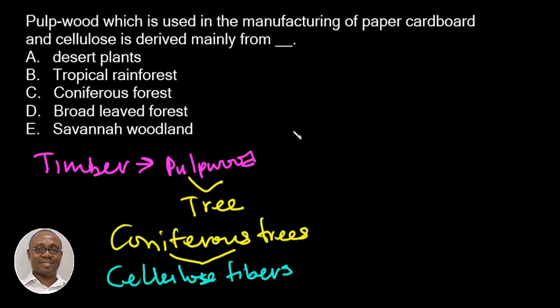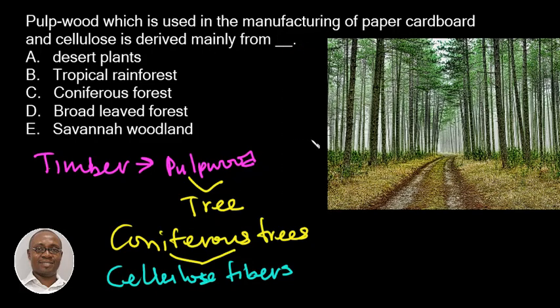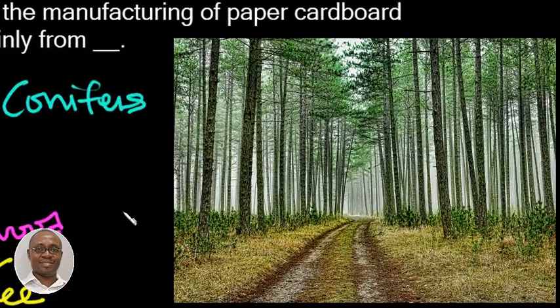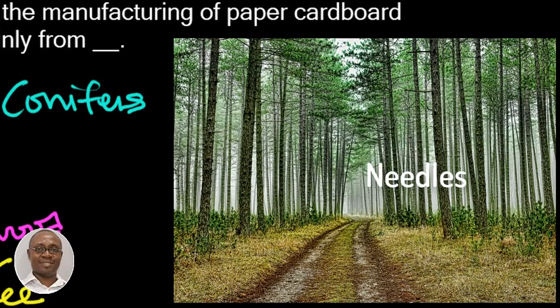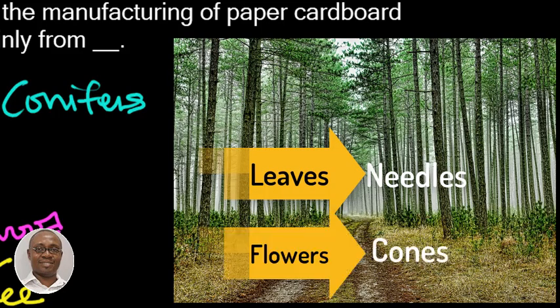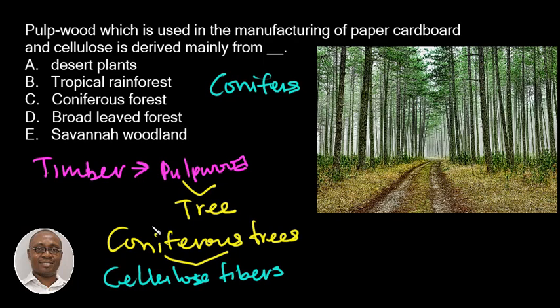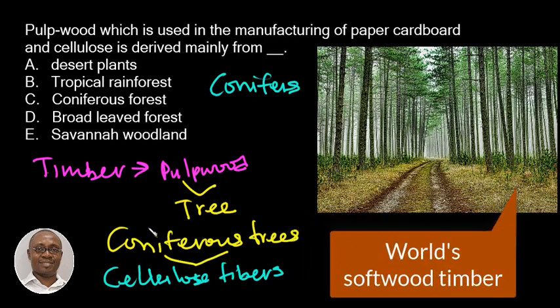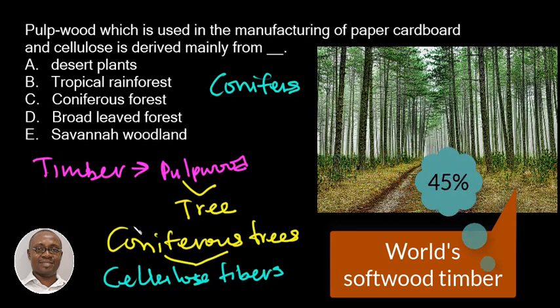The coniferous forests consist mainly of coniferous trees that grow needles instead of leaves and cones instead of flowers. Coniferous forests provide all the world's soft wood timber — the major construction wood of temperate regions — and about 45% of the world's annual lumber production.